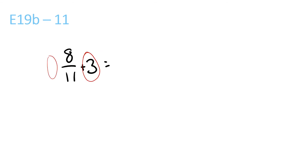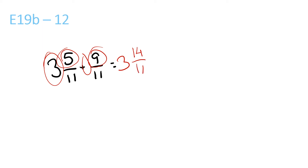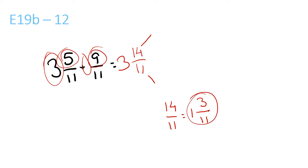3 plus nothing there is 3. 8 over 11 plus nothing there is 3 and 8 over 11. 5 plus 9 is 14, and the 11 stays the same. The top one is larger than the bottom one. So 14 over 11 — 11 goes into 14 once with a remainder of 3 over 11. So 1 and 3 over 11 plus 3 is equal to 4 and 3 over 11.